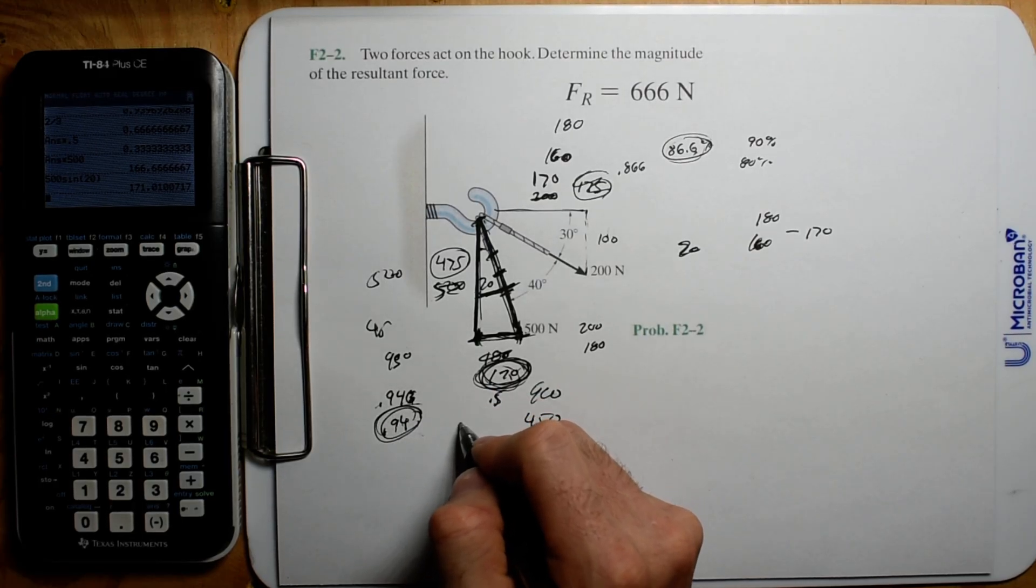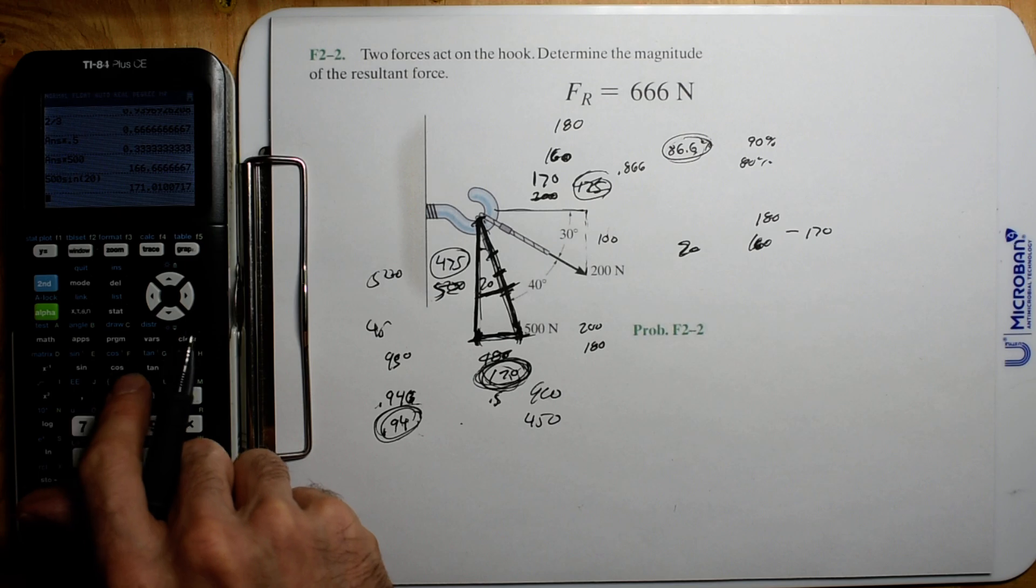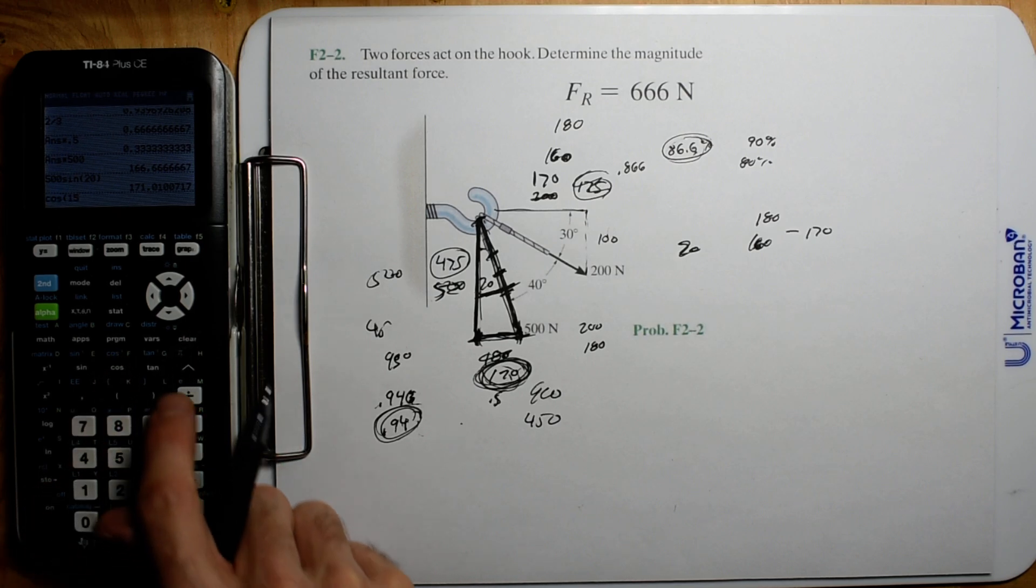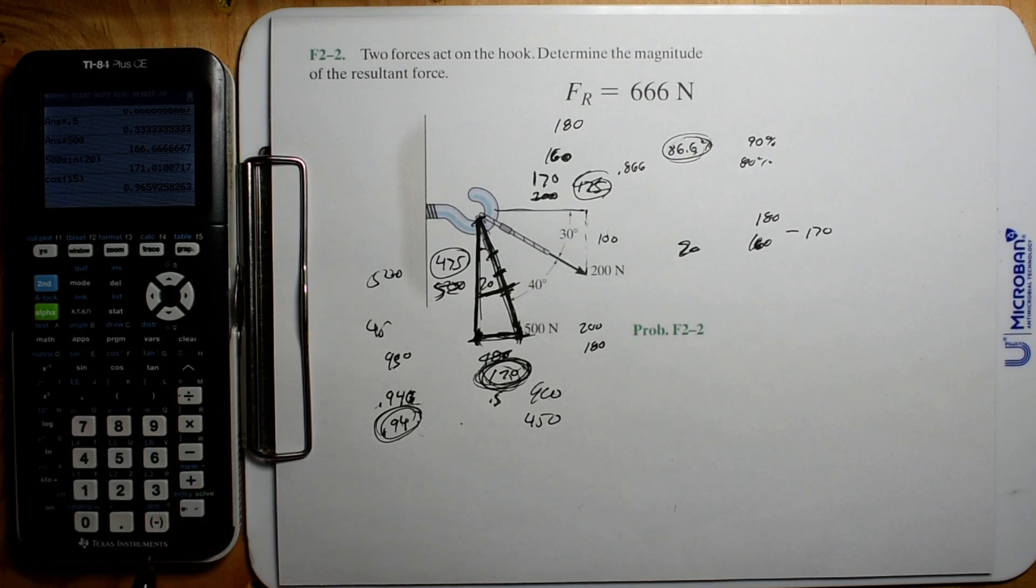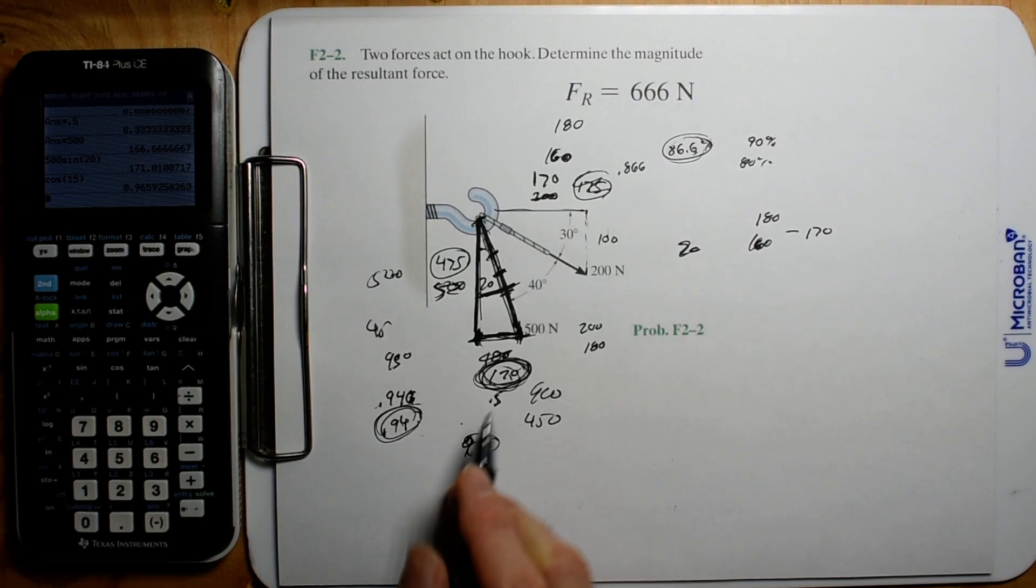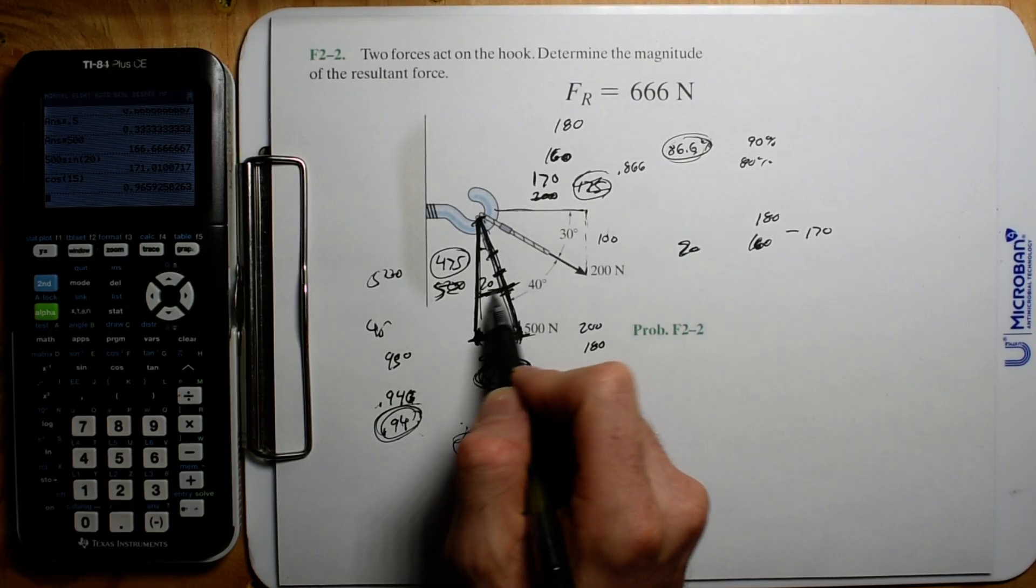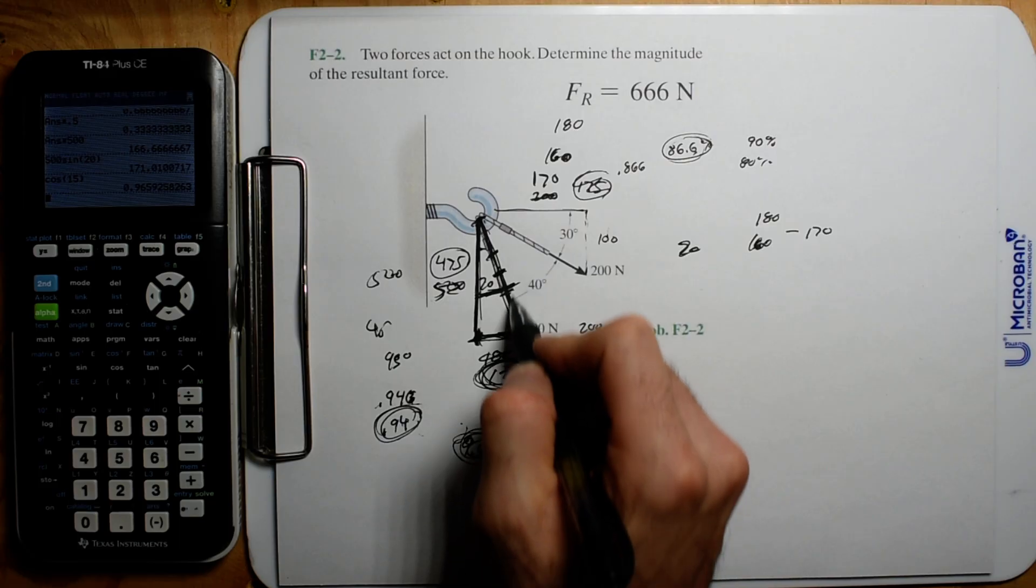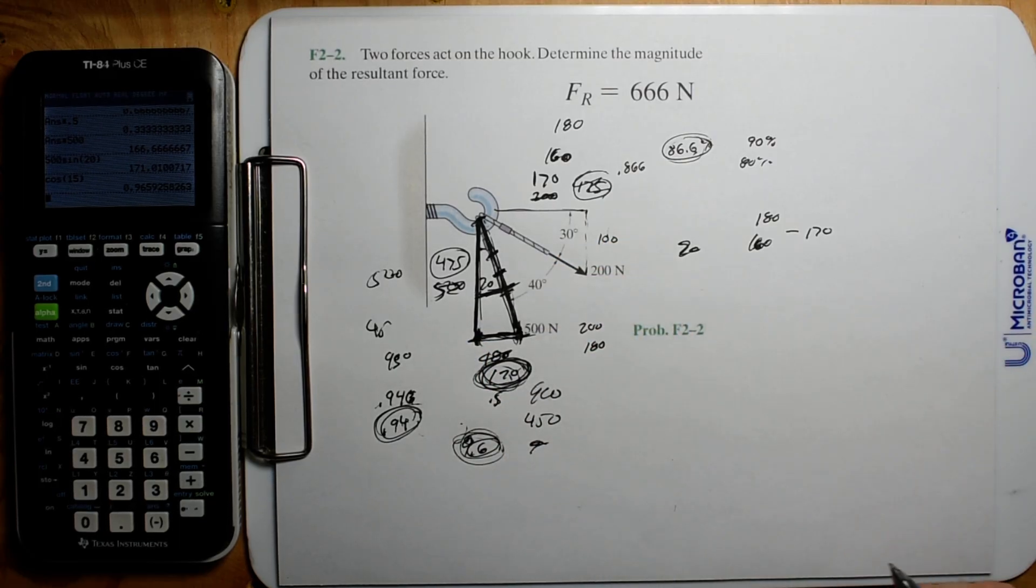Cosine of 15 degrees is like 96.5. Yeah, so 96.6. So you're just, the second this gets small, it's almost 100% of whatever this hypotenuse is. All right, two minutes to go.